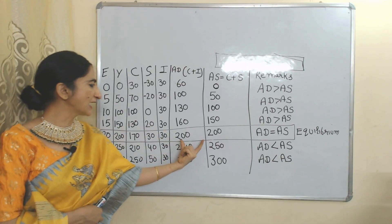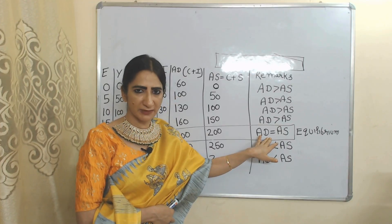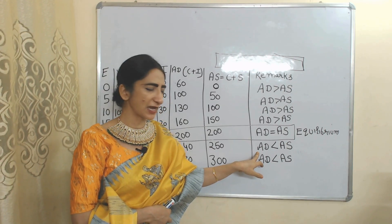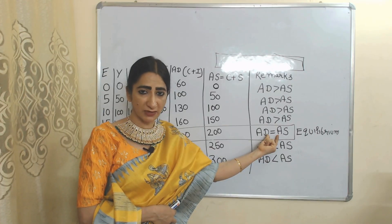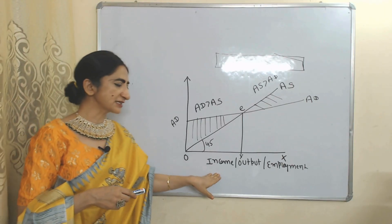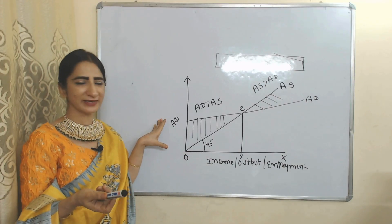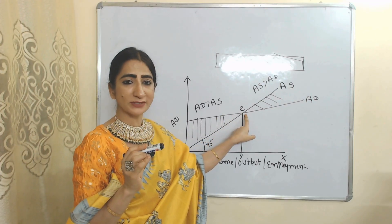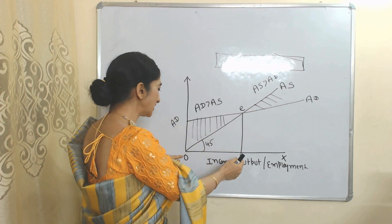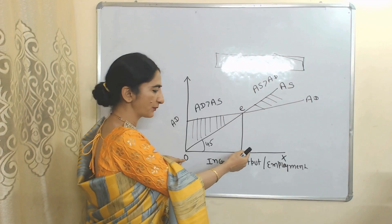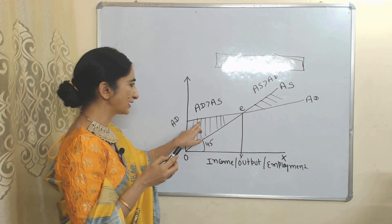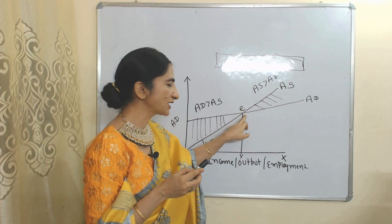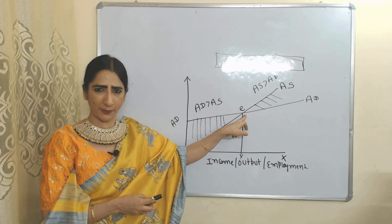Before the equilibrium point, aggregate demand is more than aggregate supply. After the equilibrium point, aggregate supply is more than aggregate demand. In the diagram, on the x-axis we have income, output, or employment; on the y-axis we have aggregate demand. The 45-degree line represents aggregate supply, and the curve represents aggregate demand. Point E is our equilibrium point because at this point aggregate demand equals aggregate supply, and the equilibrium level of income or employment is OY.